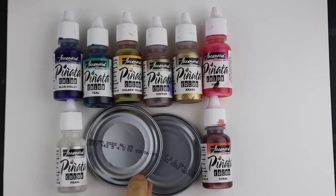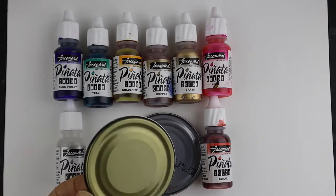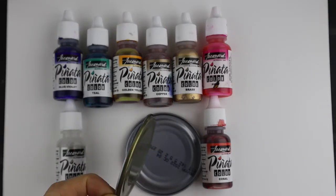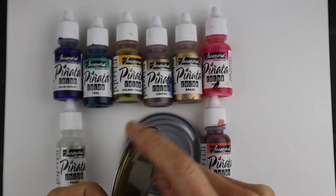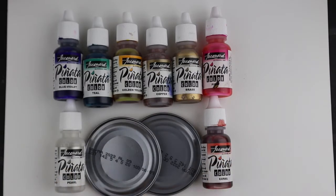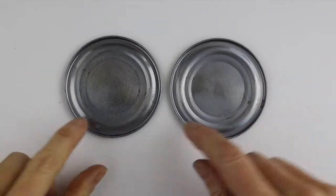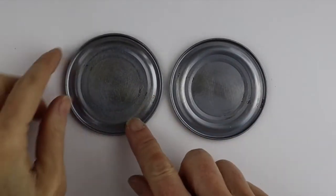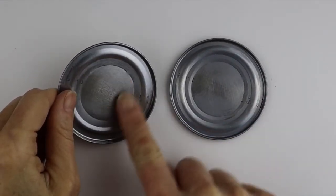For this project I'm using these lids from cans. I just cut them off with one of those can openers that leaves a soft edge, and then I have the Piñata alcohol inks. I had to sand off the numbers but it worked quite well - just get a bit of sandpaper and get the numbers off there.